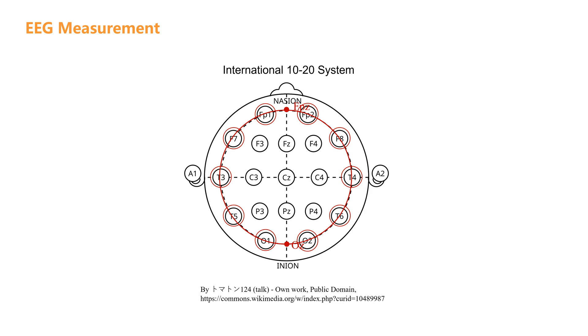The distance from FP1 and FP2 to FPZ, as well as the distance from O1 and O2 to OZ, each accounts for 10% of the total length of these lines. The remaining points are spaced 20% apart along the rest of the lines.